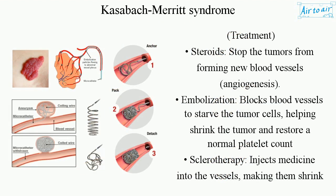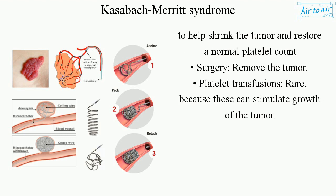Treatment options include: Steroids, which stop the tumors from forming new blood vessels (angiogenesis). Embolization, which blocks blood vessels to starve the tumor cells, helping shrink the tumor and restore a normal platelet count. Sclerotherapy, which injects medicine into the vessels making them shrink, to help shrink the tumor and restore a normal platelet count. Surgery to remove the tumor. Platelet transfusions are rare because these can stimulate growth of the tumor.